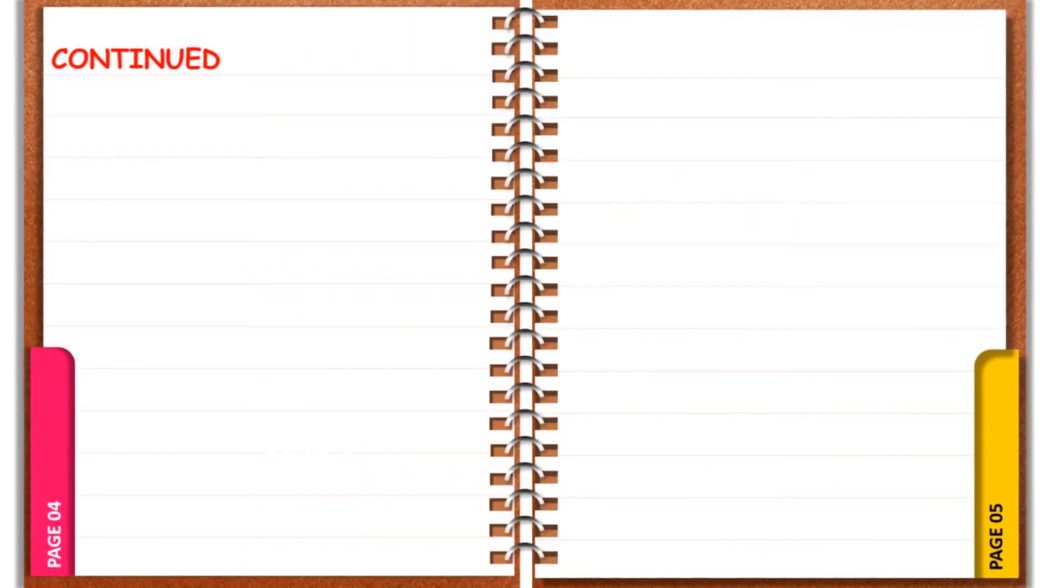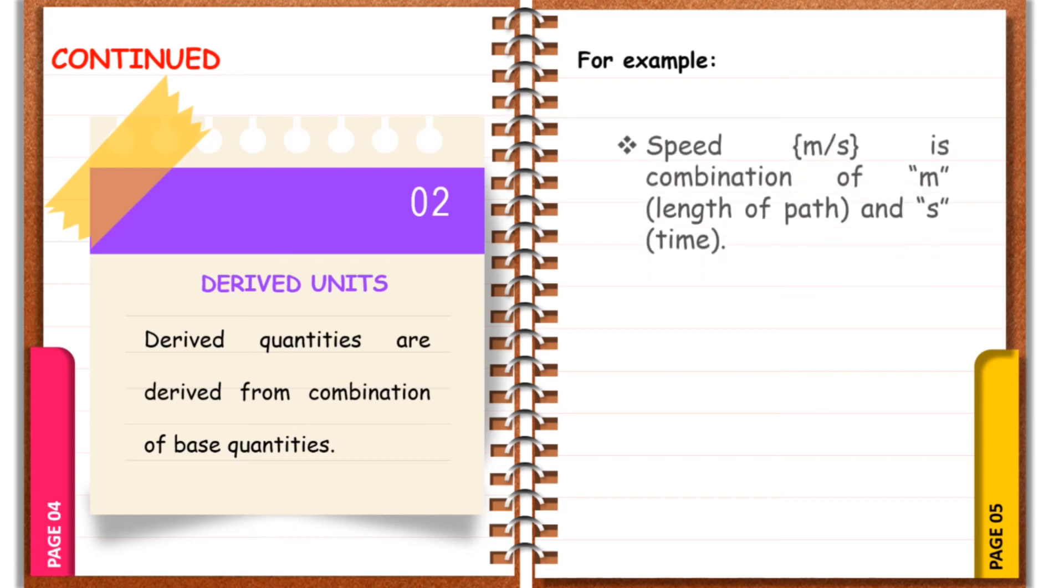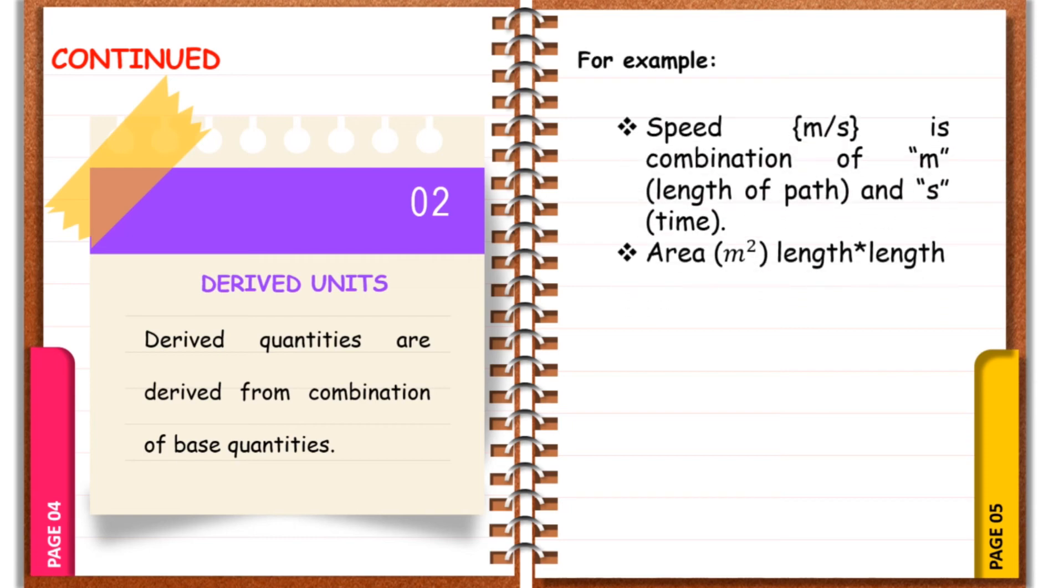All other physical quantities can be expressed as algebraic combinations of the base quantities. Each of these physical quantities is then known as a derived quantity and each unit is called a derived unit. For example, speed is a combination of two base units that are meter and second.